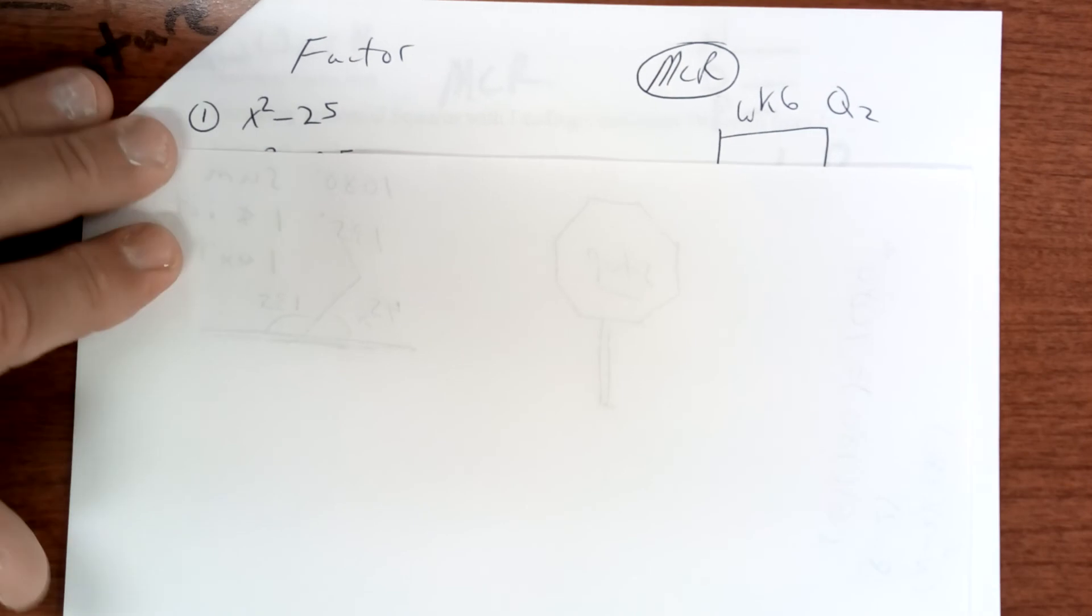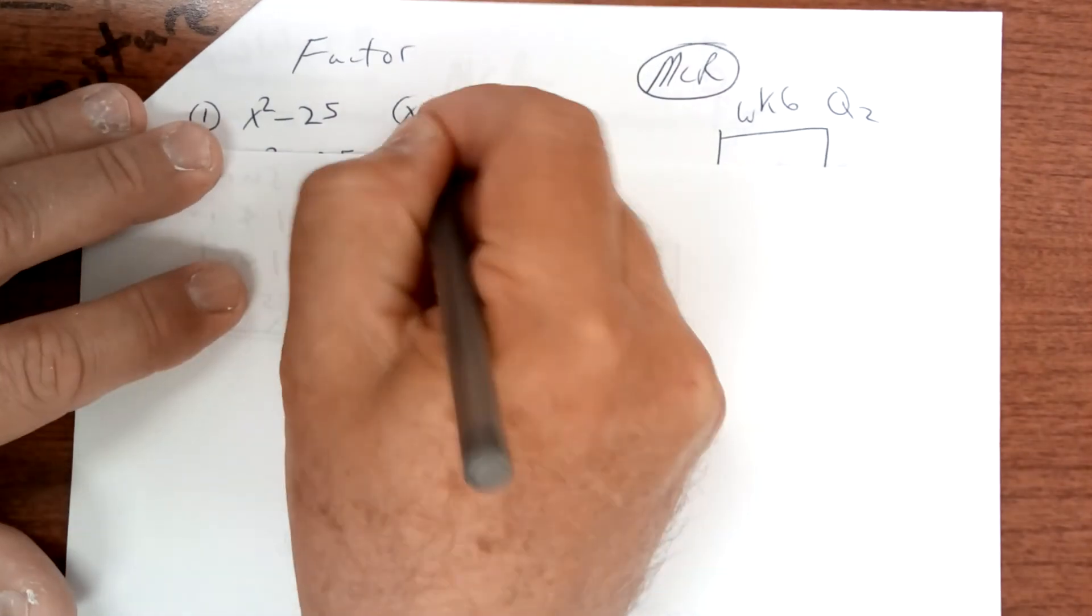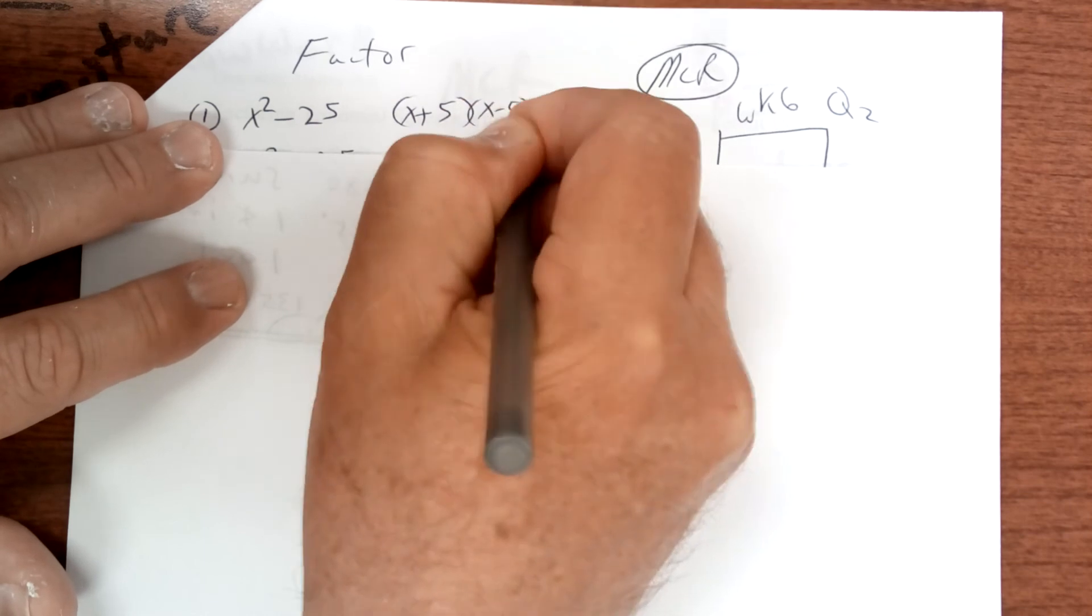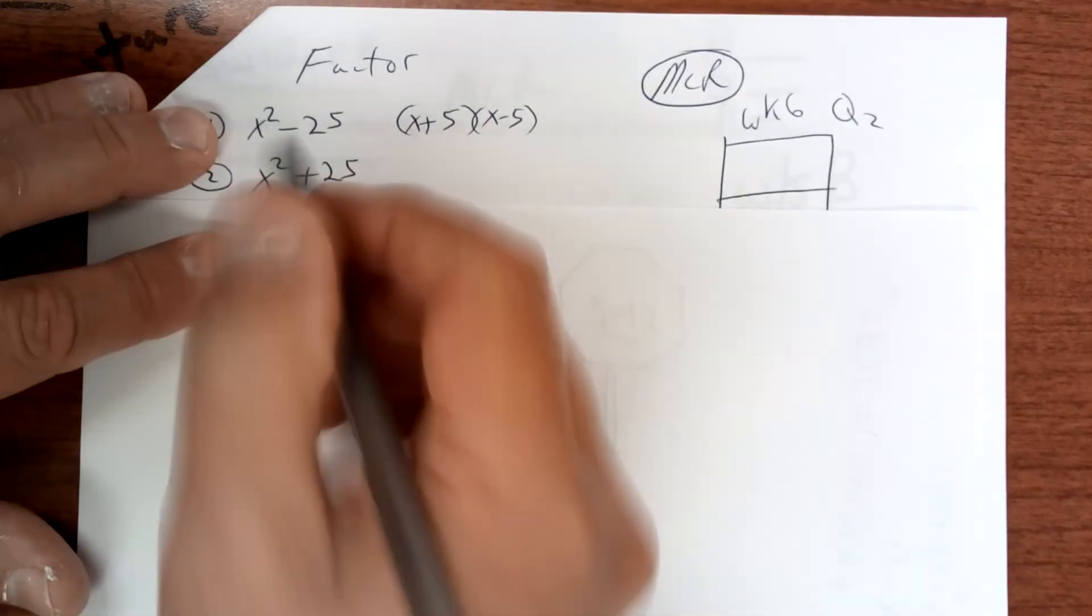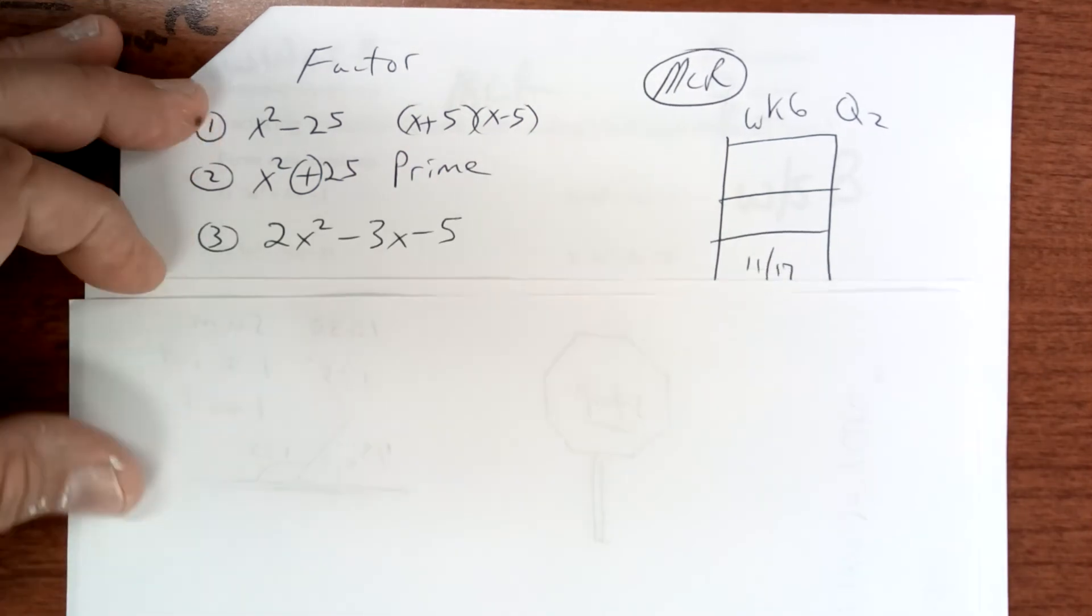All right, so look here. This right here is the difference of two squares, so that's going to be x plus 5, x minus 5. This one right here is not the difference, so this one is prime.